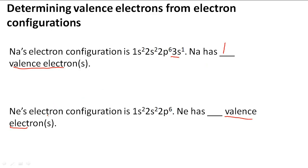Ne, in this second problem, the electron configuration is 1s²2s²2p⁶. So it has one less electron than Na. Ne has how many valence electrons?